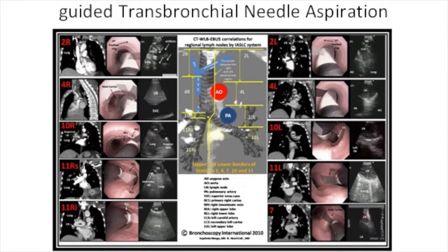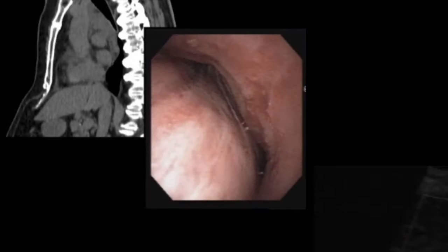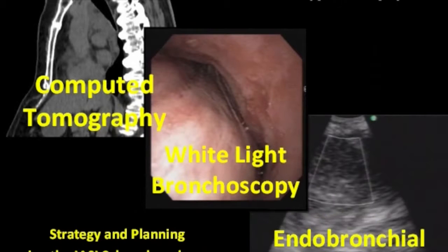This poster was designed to help bronchoscopists perform endobronchial ultrasound guided TBNA. Endobronchial ultrasound, also known as EBUS, is used to sample mediastinal and hilar lymph nodes in patients with cancer and benign disease.